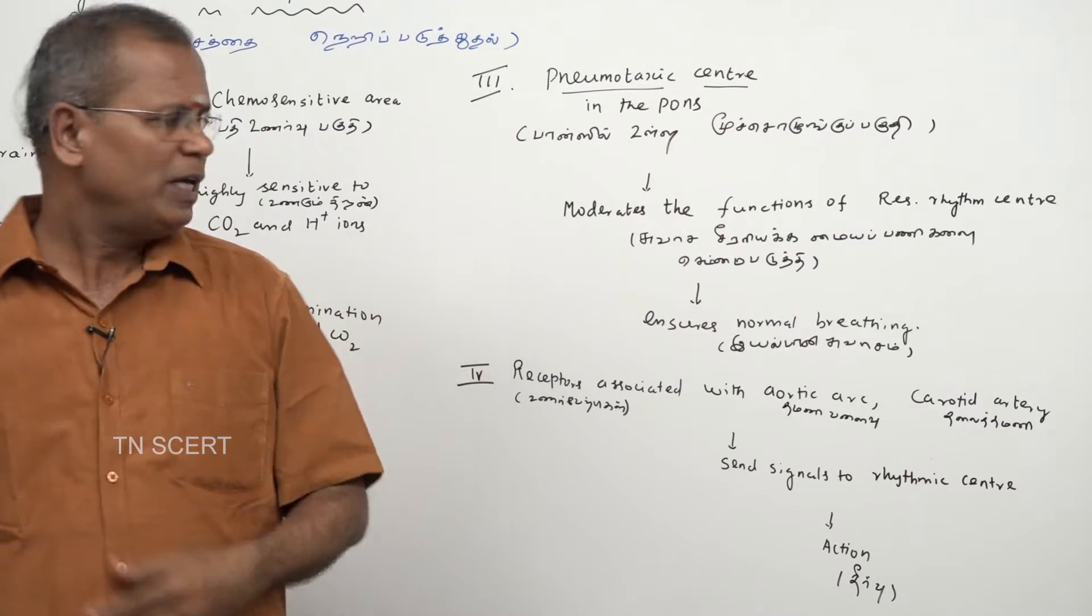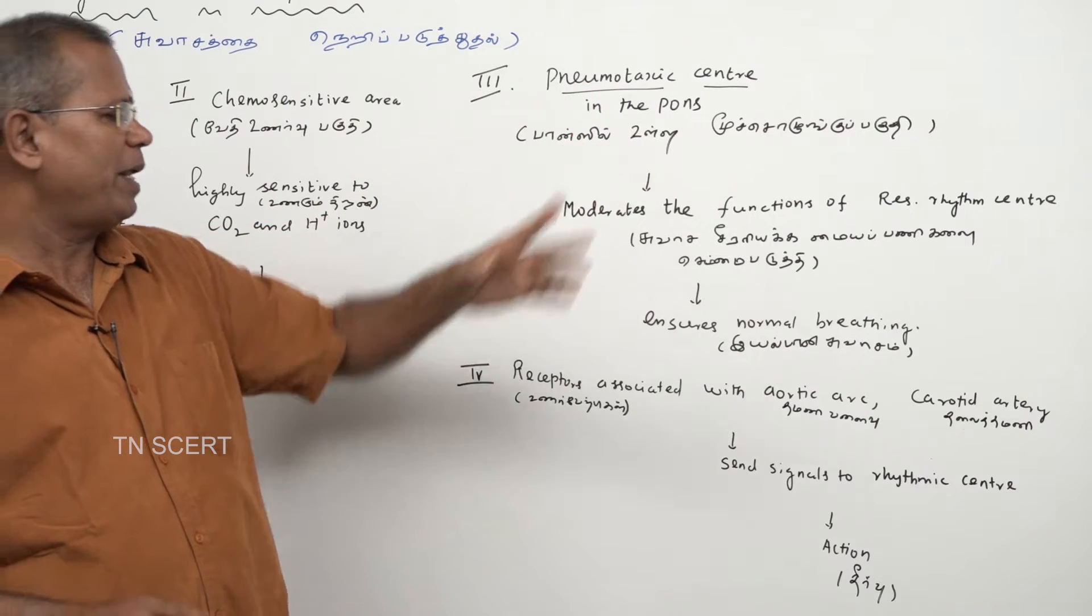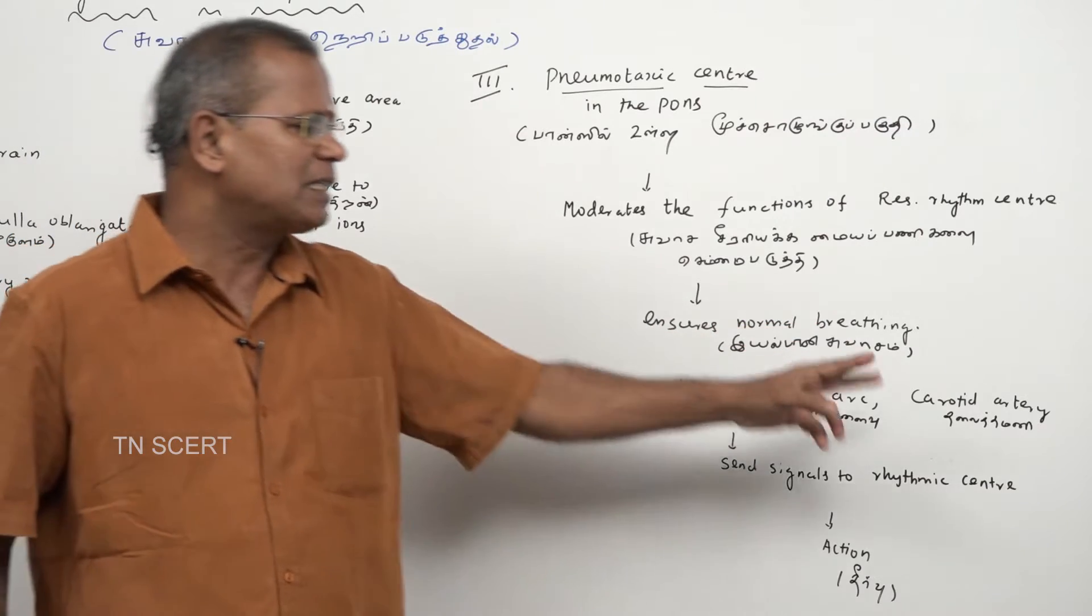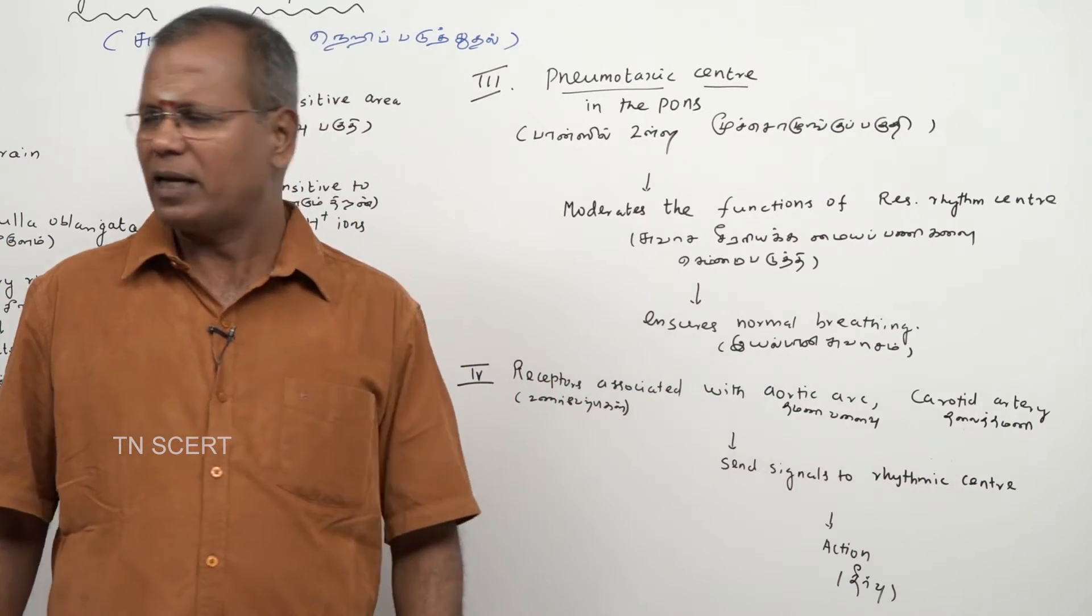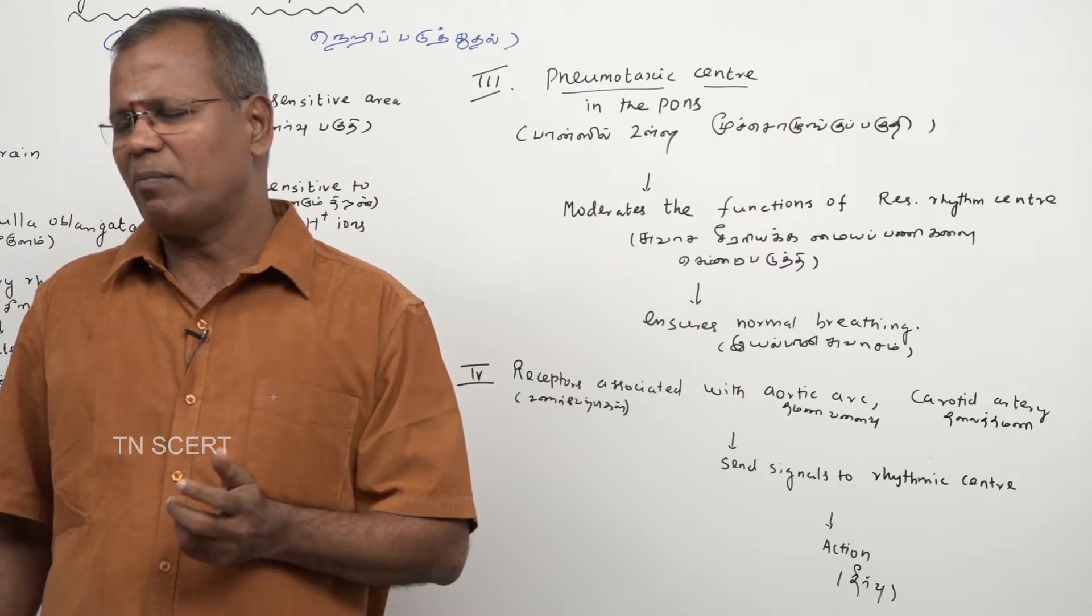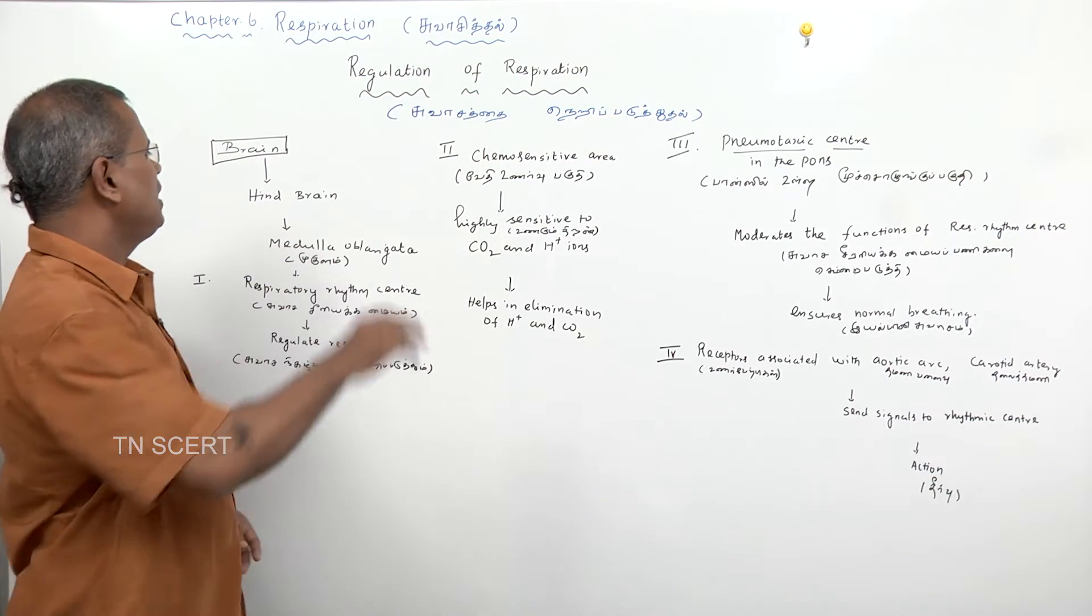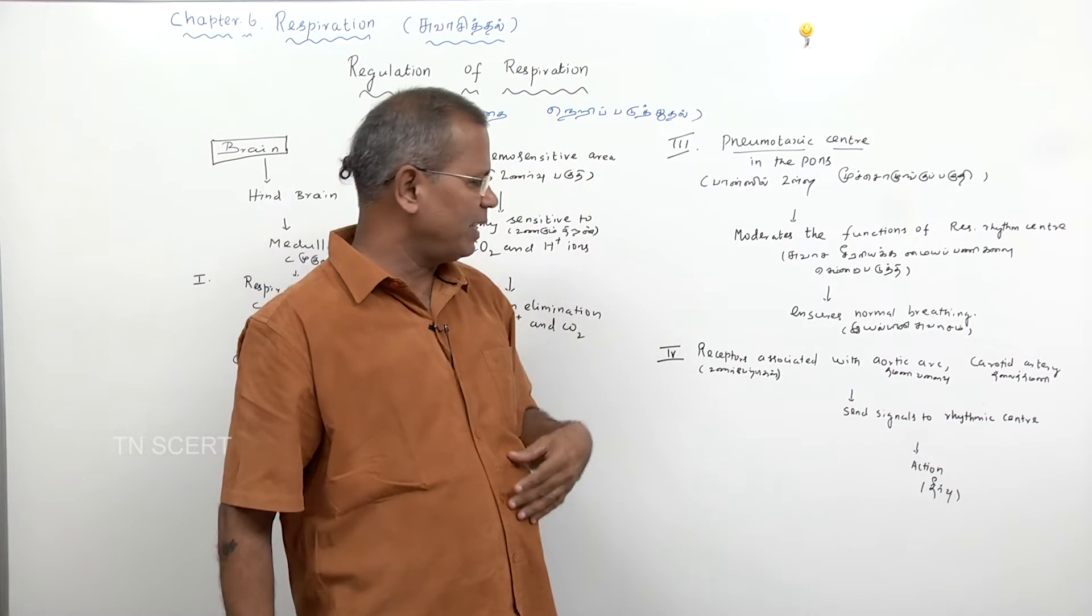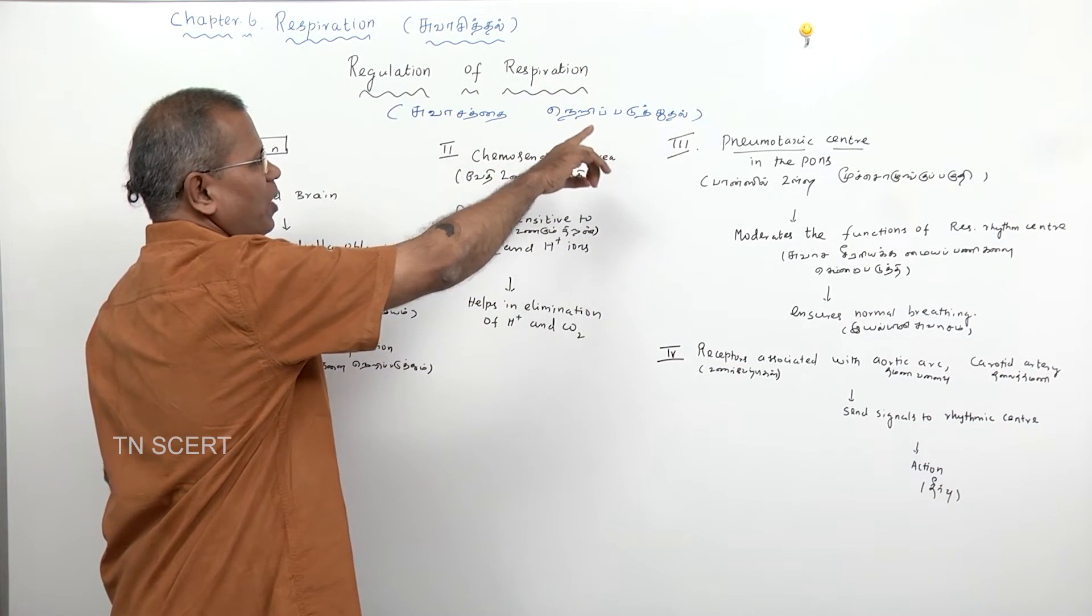This is the pneumotaxic center, which maintains normal breathing rhythm. Receptors associated with aortic arch and carotid artery send signals to the rhythmic center. The rhythmic center then sends signals accordingly, and action takes place. Thus regulation of respiration is controlled by medulla oblongata, the respiratory rhythmic center, the chemosensitive center, the pneumotaxic center, as well as receptors associated with aortic arch and carotid artery.